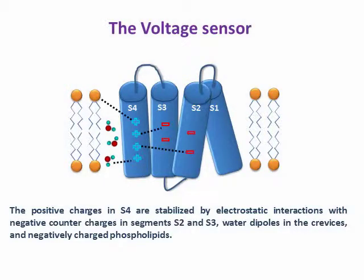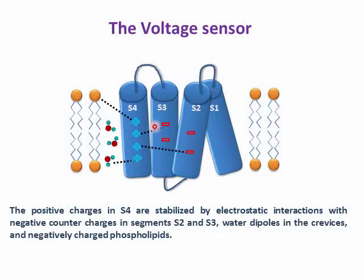It is commonly recognized that four highly conserved arginine residues along the S4 mainly contribute to the voltage-driven gating charge transfer during channel activation. In addition, the gating charges reside in aqueous crevices and translocate across a focused electrical field, where hydrophobic residues form a plug that occludes the gating pore. Along this narrow path, the positive charges in S4 are stabilized by electrostatic interaction with negative counter charges in S2 and S3.